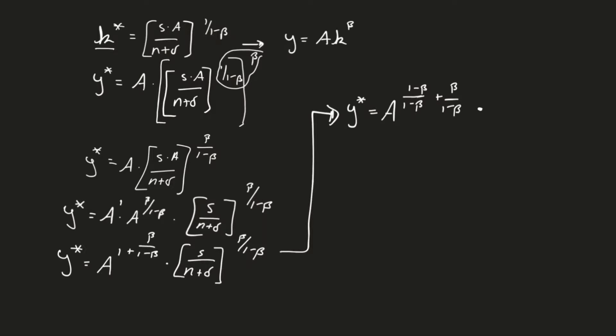This is times that same thing, which is S over N plus delta to the beta over 1 minus beta. Now, what I know here is this is 1 minus beta plus beta. Those betas are going to cancel out, meaning that I'm left with when I combine these, I'm left with y equals a to the 1 over 1 minus beta times S over N plus delta to the beta over 1 minus beta.